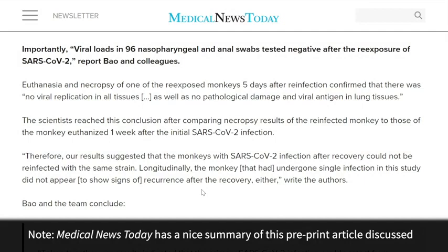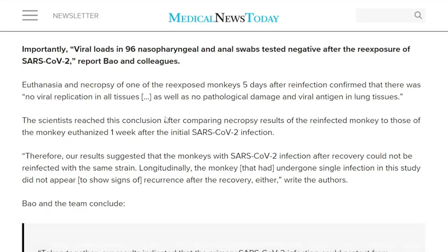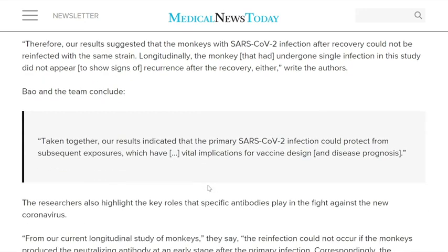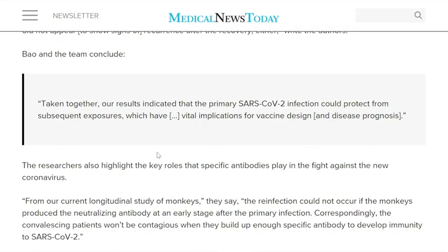When they looked at that sacrificed monkey after five days, they showed there was no viral replication in all tissues as well as no pathological damage and viral antigen in lung tissues. Therefore, our results suggested that the monkeys with SARS-CoV-2 infection after recovery could not be reinfected with the same strain. The team concludes: our results indicated that the primary SARS-CoV-2 infection could protect from subsequent exposures, which has vital implications for vaccine design and disease prognosis.